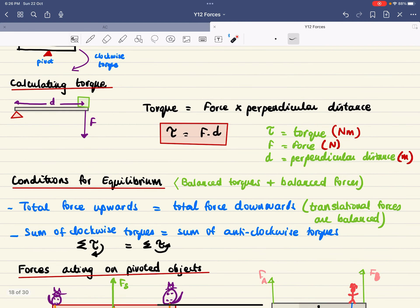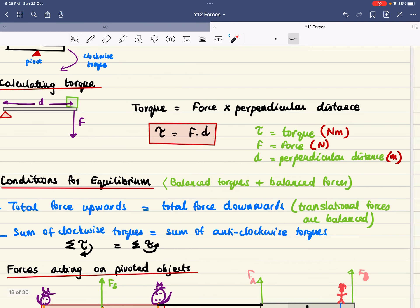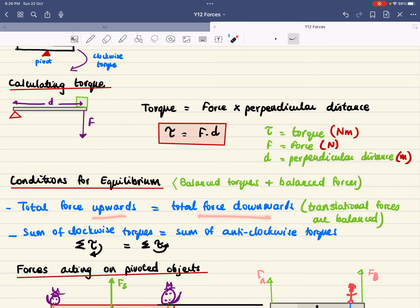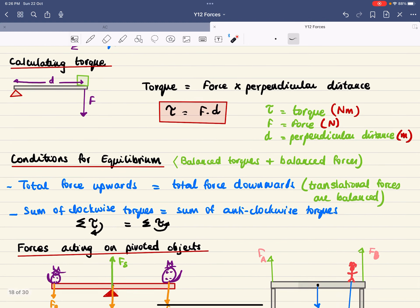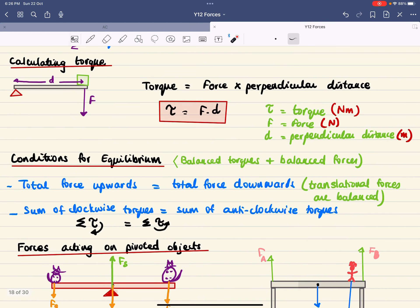The conditions for equilibrium are balanced torques and balanced forces. Total force upwards equals total force downwards—meaning translational forces are balanced—and the sum of clockwise torques equals the sum of anti-clockwise torques. Instead of writing this out, there's a symbolic way using sigma (Σ) to represent total clockwise and anti-clockwise torques.